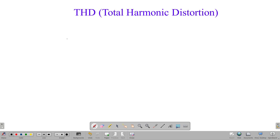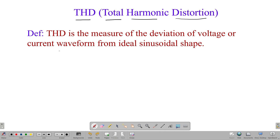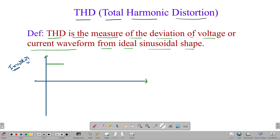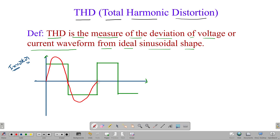Before finding THD in MATLAB, you should know what THD is — that is nothing but Total Harmonic Distortion. It defines the measure of the deviation of a voltage or current waveform from its ideal sinusoidal shape. For example, if you take the output of an inverter, it is in the form of a square wave, not sinusoidal. But we need exactly AC because an inverter converts DC to AC.